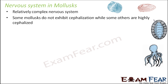Some mollusks do not exhibit cephalization while some others are highly cephalized. If you look at the structure of mollusks, you can actually see a huge difference between different organisms. For example, Pila, Unio, Chiton, and Octopus all fall under the phylum Mollusca. But if you look at their structures, they are very different from each other, even though they fall under the same phylum because of some functional similarities.